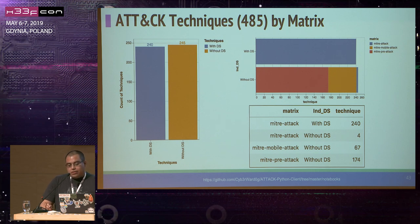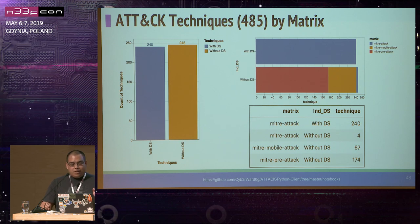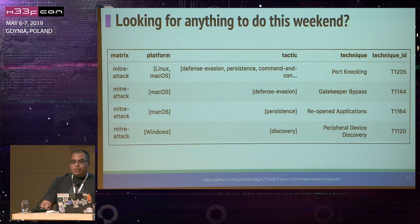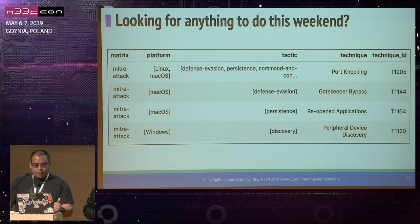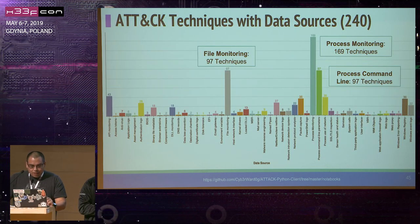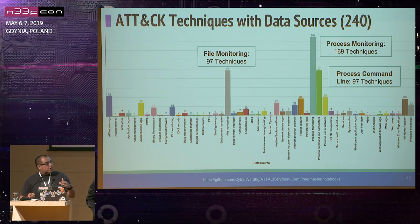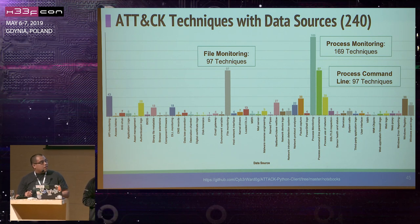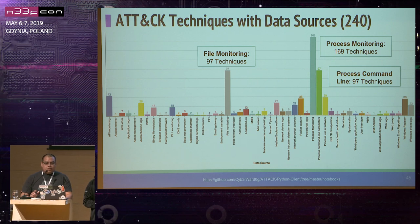If we split all the techniques with and without data sources by matrices, all the techniques that do have data sources belong to the Enterprise ATT&CK. Interestingly, there are four Enterprise ATT&CK techniques that do not have data sources — a big opportunity to collaborate with the ATT&CK team. Looking at all the data sources in the ATT&CK framework, the most relevant are process monitoring, file monitoring, and process command line. With process monitoring alone you can start analyzing detection of at least 169 techniques out of 240.